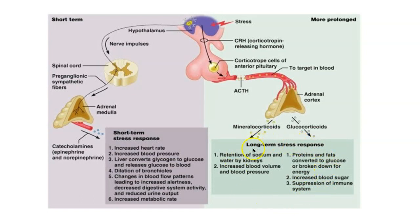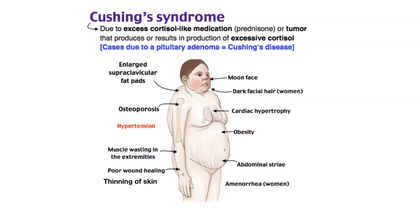These are good responses to stress and we need them. But if they go too far and we get too much release of corticosteroids, that becomes a problem called Cushing syndrome — you will see this in nursing or medical school. Cushing syndrome is due to excess cortisol. It could also be from cortisol-like medication like prednisone, which is a steroid. If people are on long-term, high-potency steroids, they will develop Cushing syndrome.